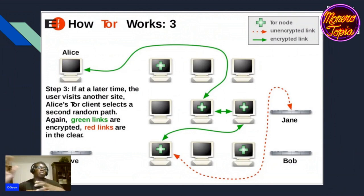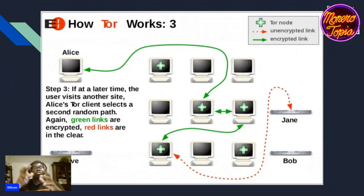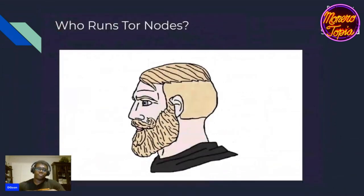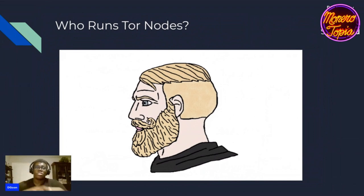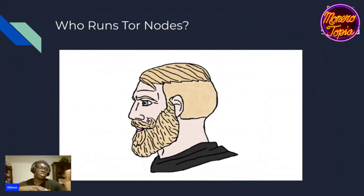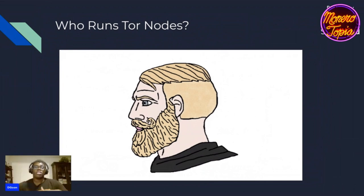It's slow because the computers might be in different countries, in someone's basement, or in a data center — it all depends. Who runs Tor nodes, you might ask? Tor nodes can be run all around the world. These are just volunteers who want to support whistleblowing and all the great things that privacy and Tor brings. They literally just put a computer or server somewhere — on premise or in the cloud — and pay for it out of their own pocket. There generally isn't a great way to make money from this; you do it to support the network and support a public good.